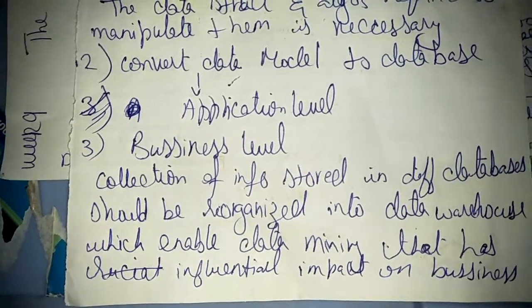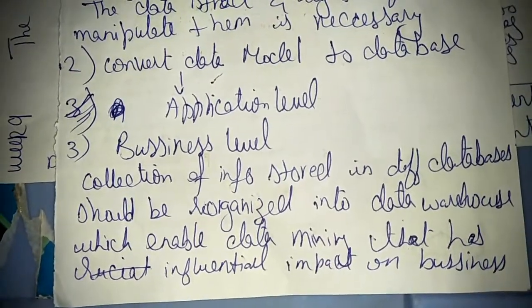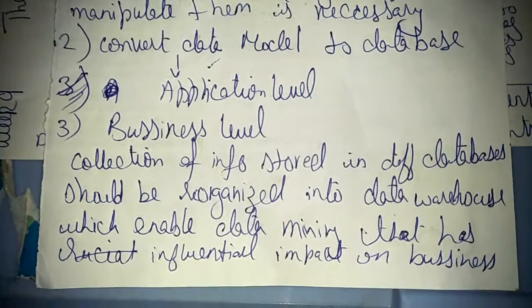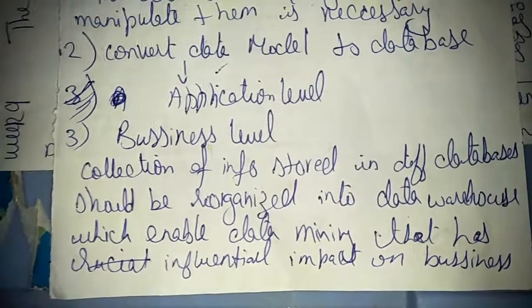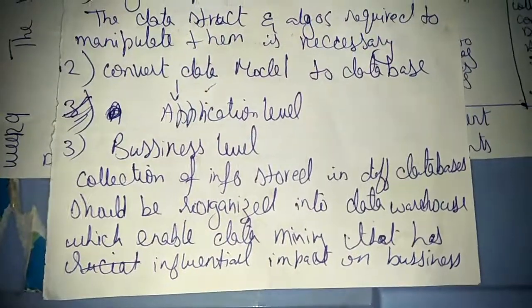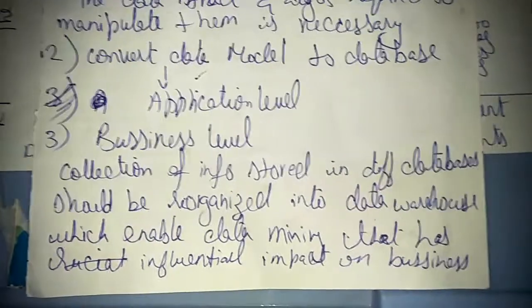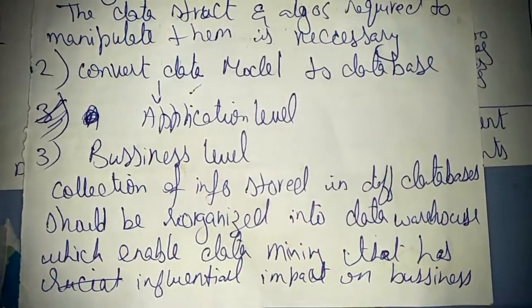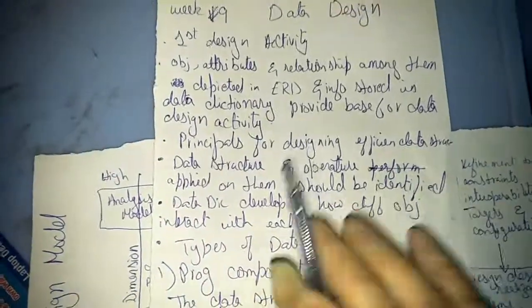There is a manager who wants to take a sales record or financial status of the company. He will go to the data warehouse and take the data. This is the procedure of data mining — how to extract data from a data warehouse. This is called the business level. This is some information about data design.